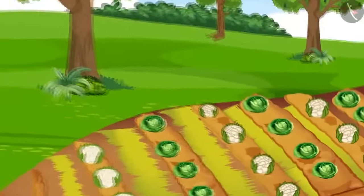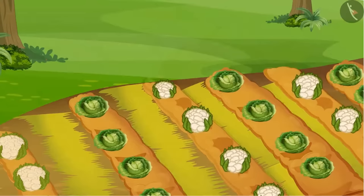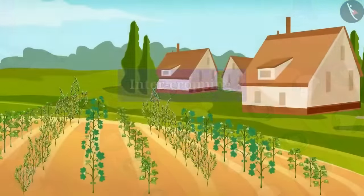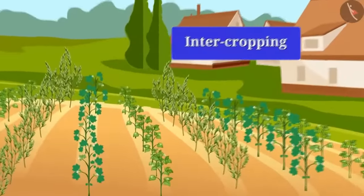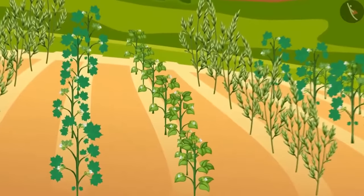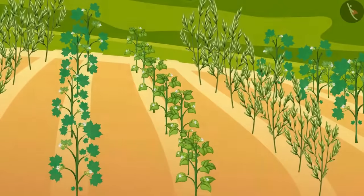Mixed cropping. In this method, different types of plants are grown in the same field. Intercropping. In this method, two or more crops are grown at the same time in a land in a certain row pattern.